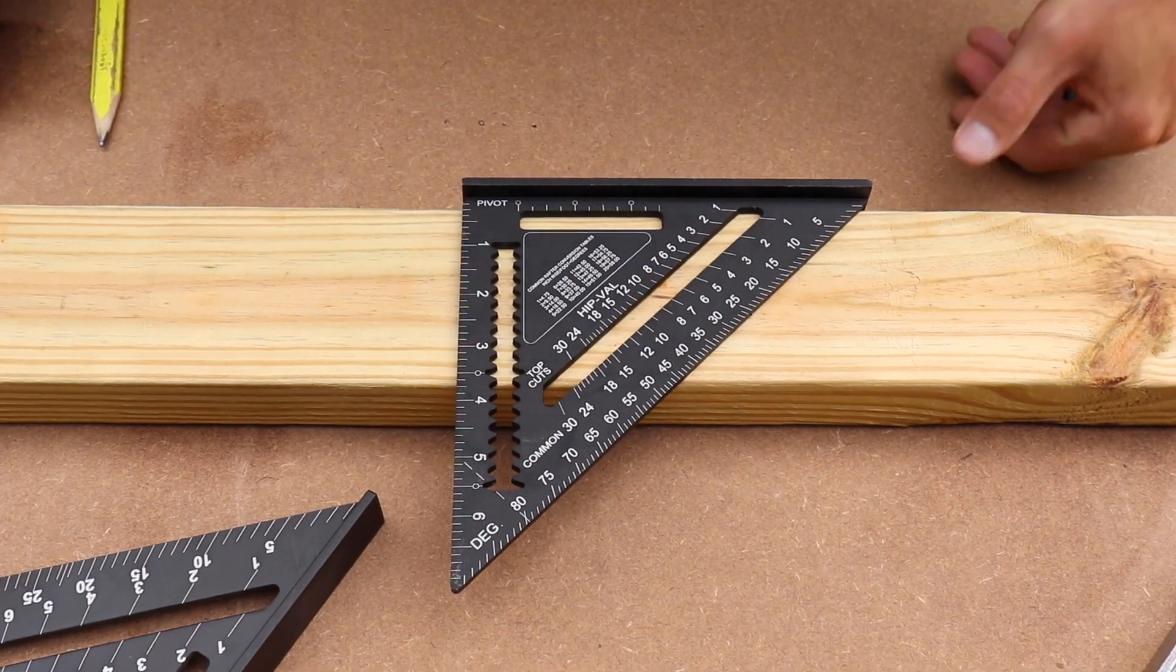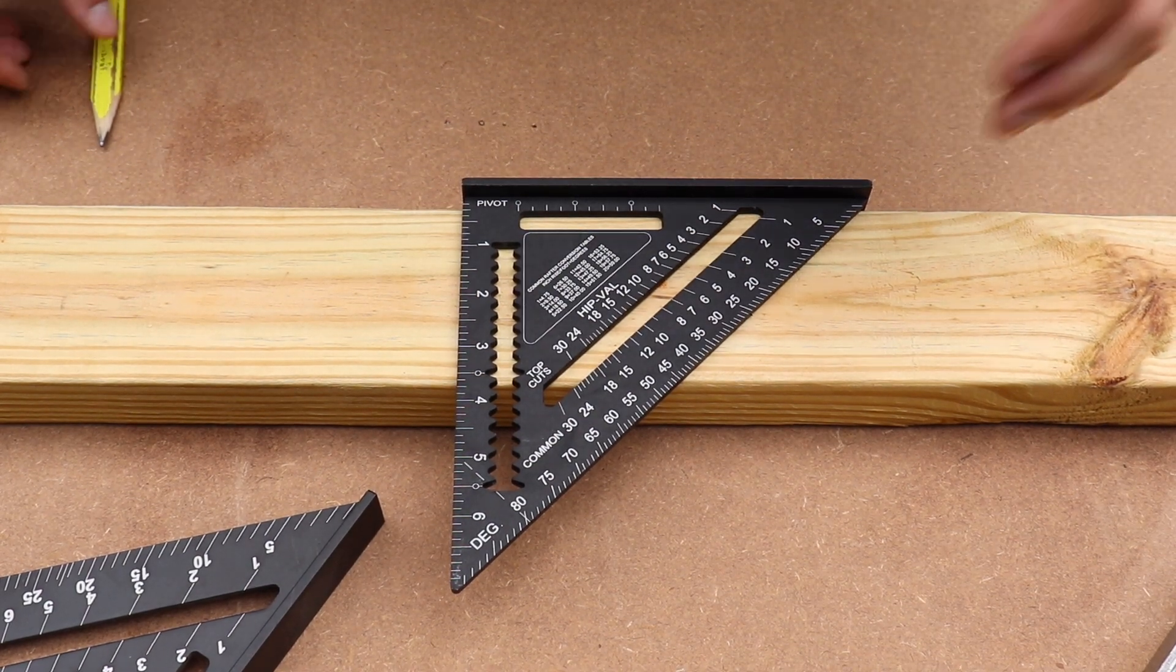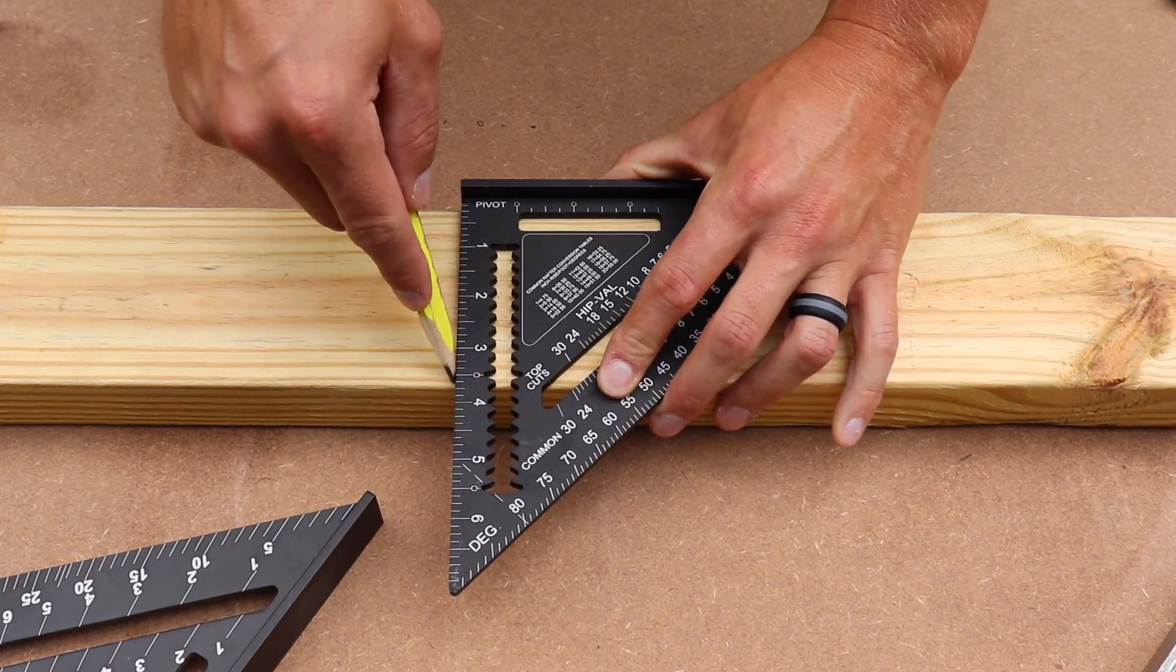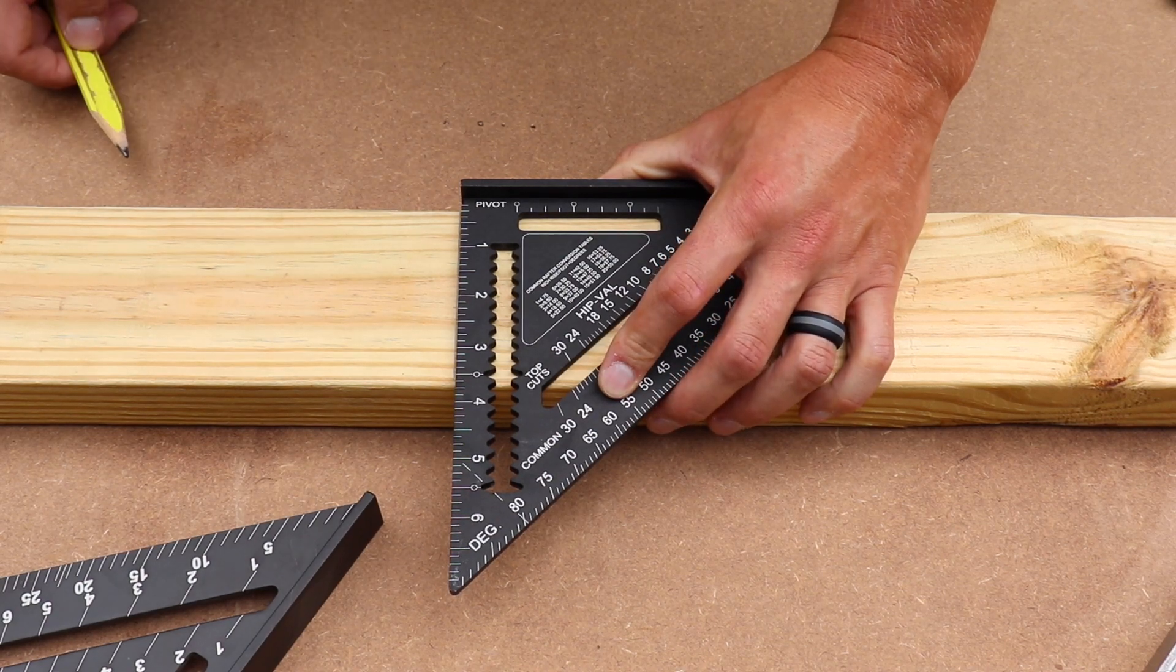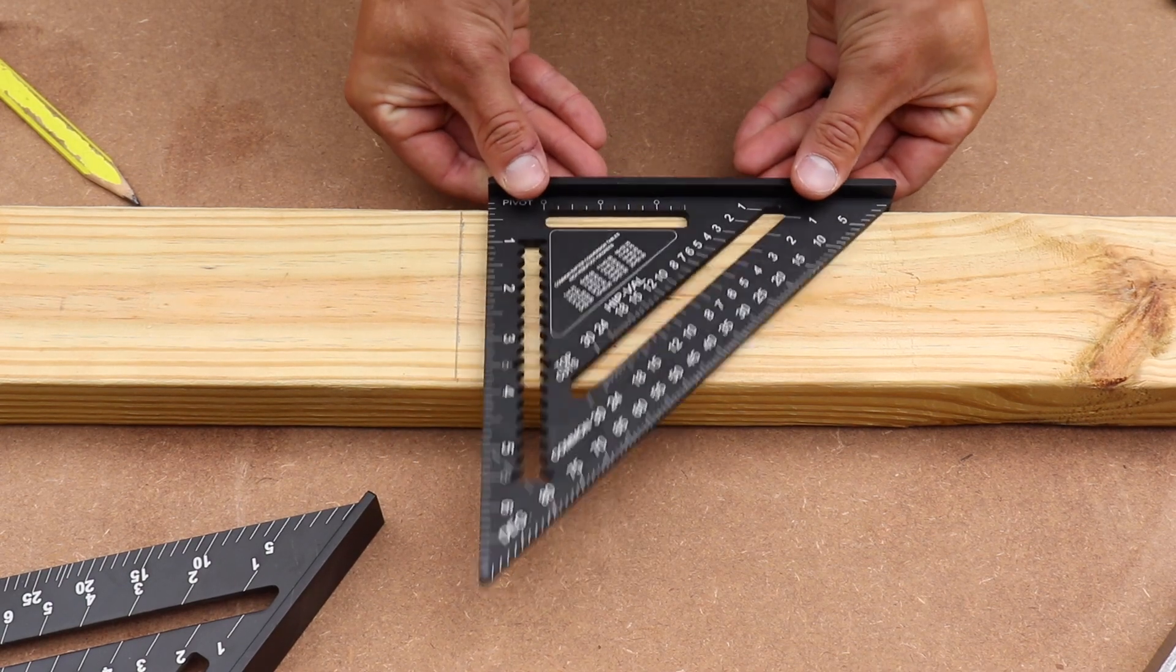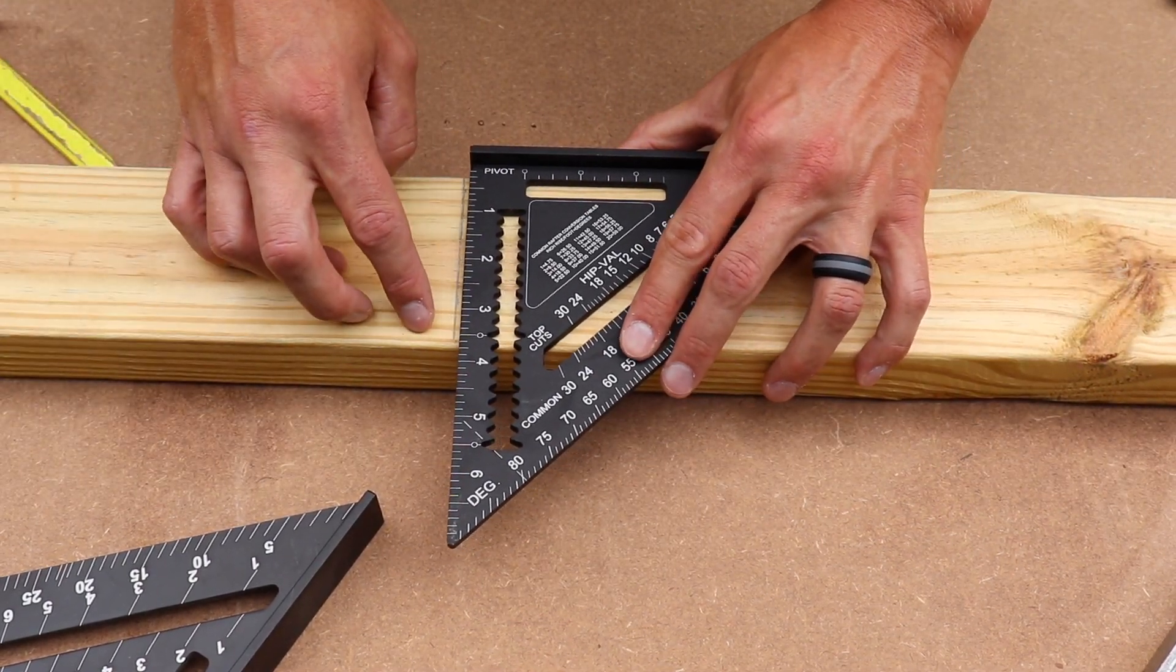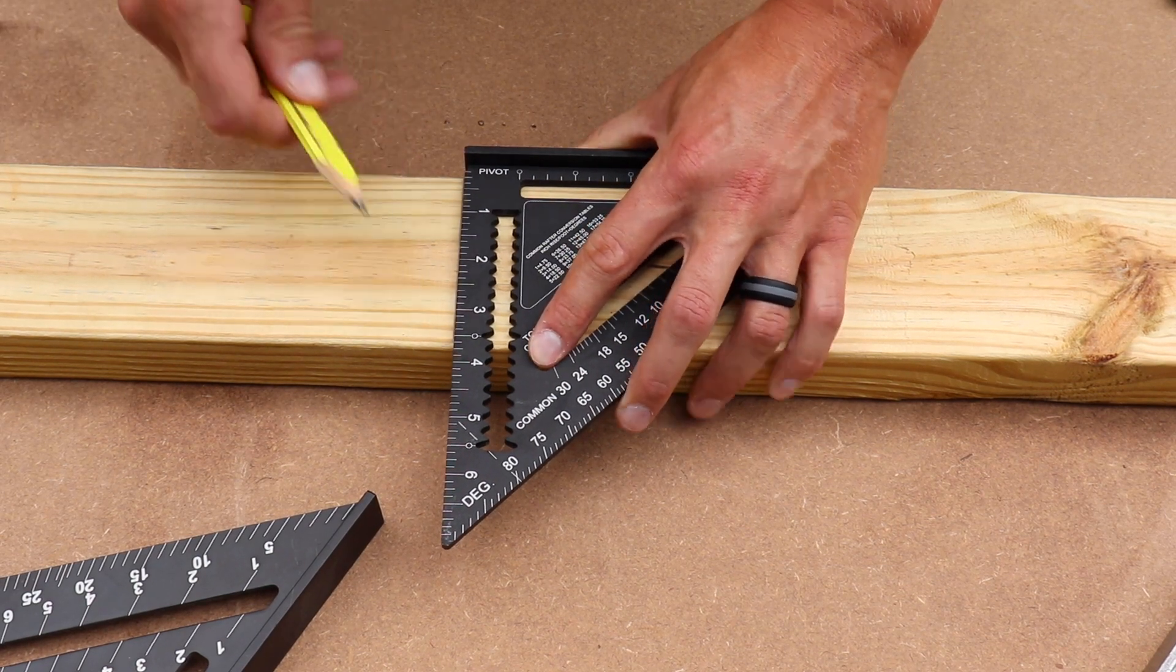All right guys, so one of the most common things that people will use a speed square for is simply to make a straight line on a two by four or whatever it is that they need to cut. In order to do that, you just butt your speed square tight up against your workpiece and just strike a line.